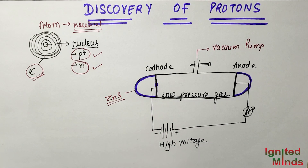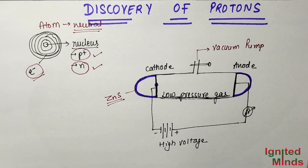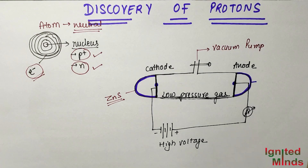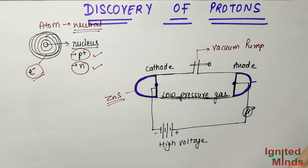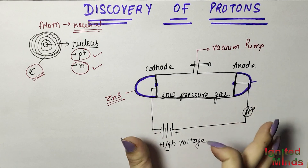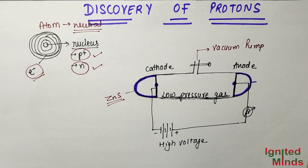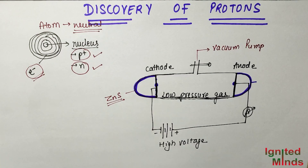In the electron discovery, we saw the screen glow on one side. Scientists reasoned that if those rays were negatively charged, then there must be positively charged particles too. So they made modifications: different cathode, anode, gas, higher voltage and pressure, and placed the fluorescent screen on the cathode side with holes in the cathode. As expected, when voltage was applied, rays passed through the holes and the fluorescent screen glowed.